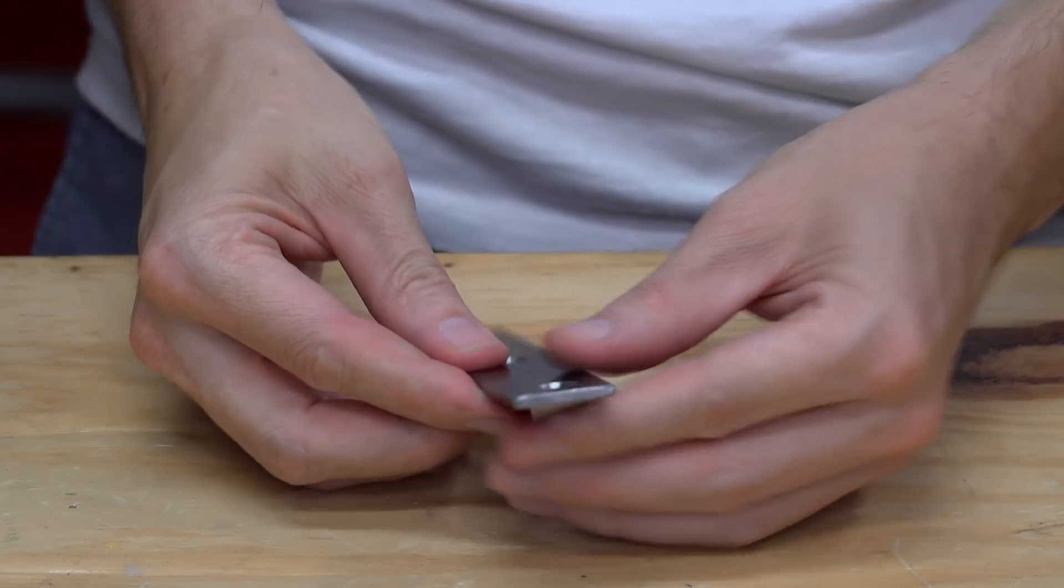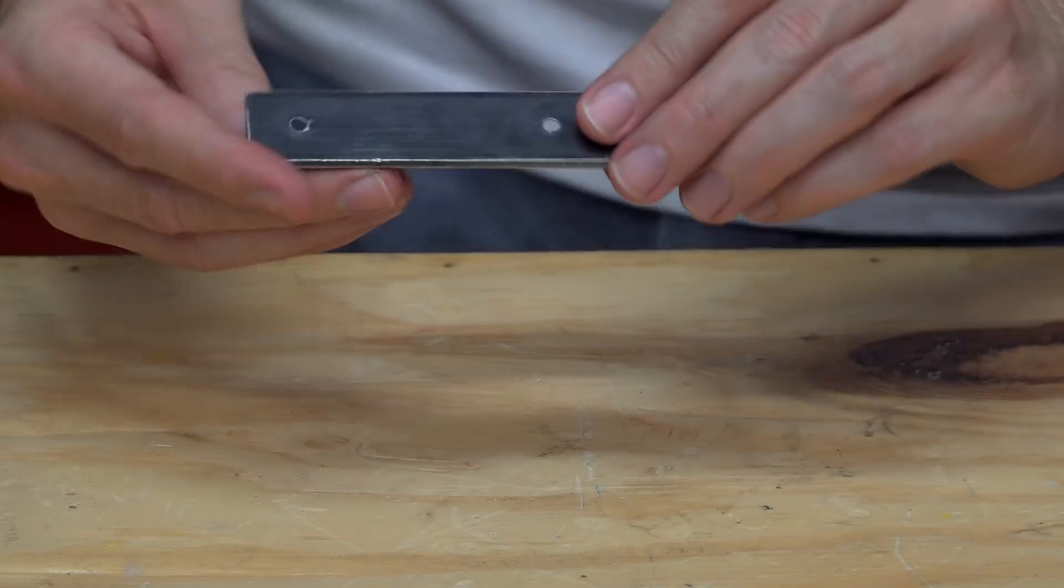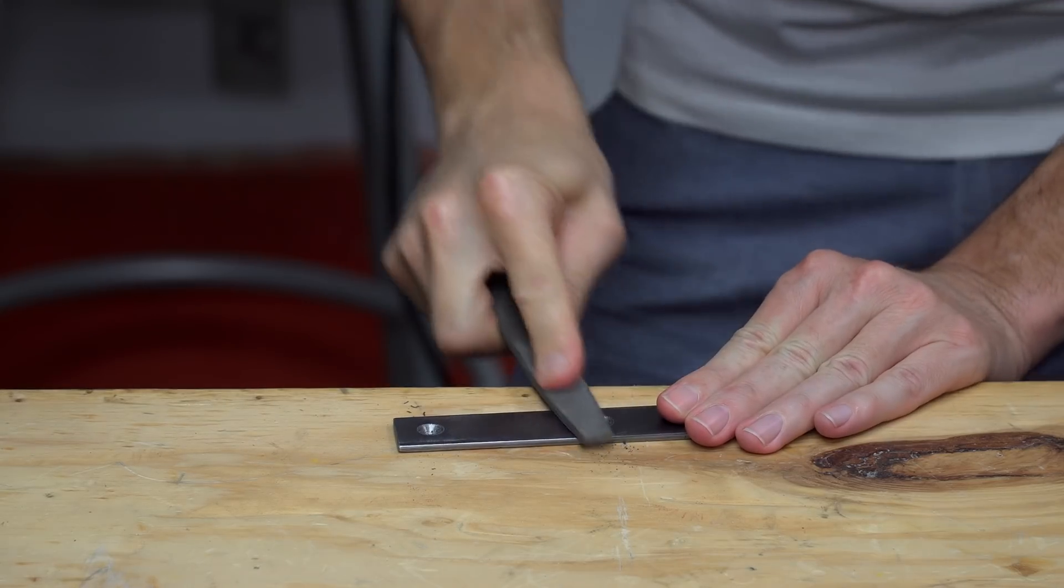The countersink bit actually produced a bit of a sharp edge. So I removed that sharp edge first by filing it down, and then using some 150 grit sandpaper to smooth it out.